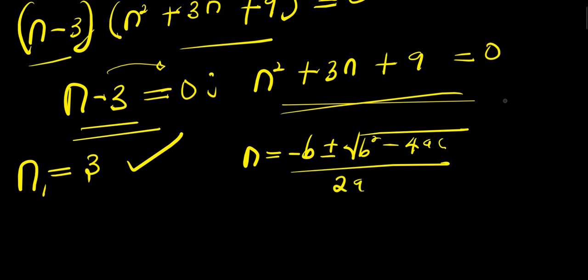a = 1, which is the coefficient of n², b = 3, and c = 9. So let's substitute everything into this particular formula.